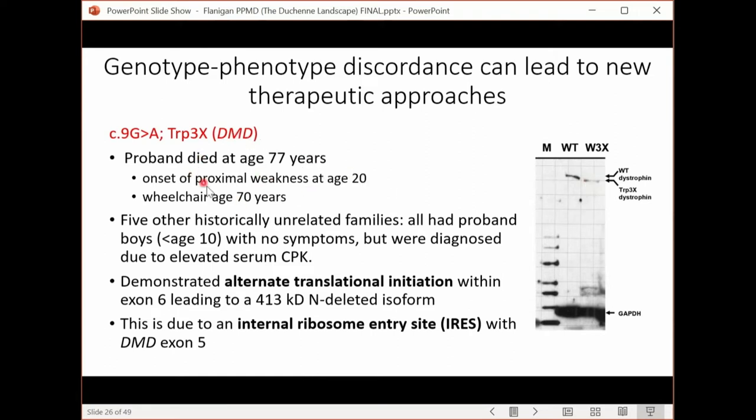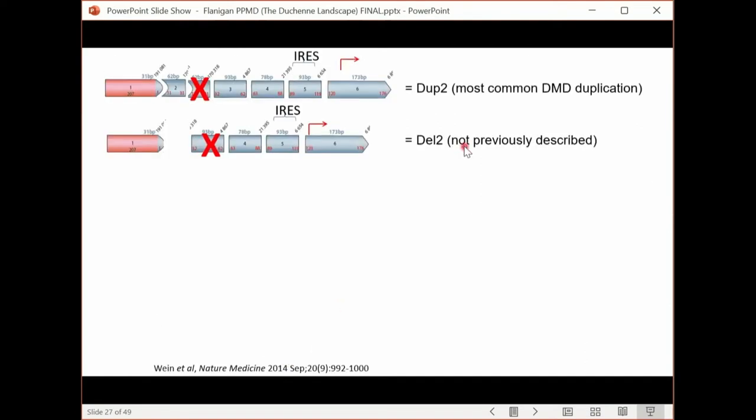And we had a sense that it's even more highly protective than he led on because we found multiple other families that were not known to be related. All of them had boys who came to attention because they had symptoms only of elevated CK, sometimes with some muscle aches. But they turned out to all be related by an unknown ancestor quite far back. They demonstrated what we call alternate translational initiation within exon 6, leading to a diminished-sized protein of about 413 rather than 417 kilodaltons. We postulated and then proved that this is due to what we call an internal ribosome entry site within DMD exon 5.